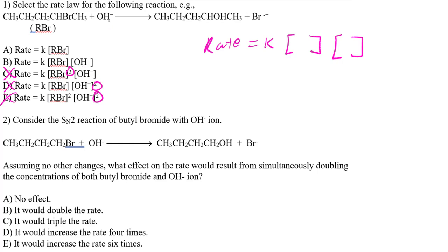It's B because in an SN2 reaction, which is what we have here, this is negative. You could say this is like NaOH — we ignore the Na because it's a spectator ion, so you just have OH⁻. Whenever you have an anion, most likely it's going to be an SN2 or an E2 reaction.